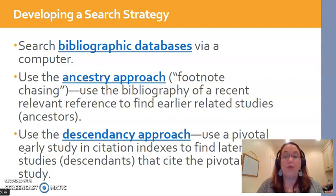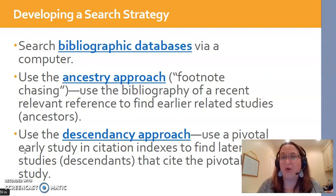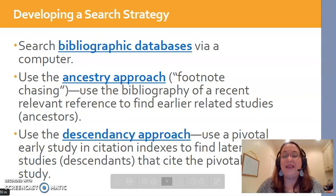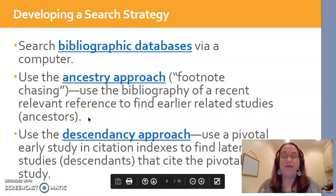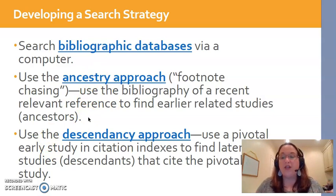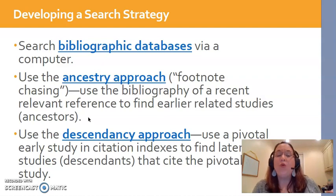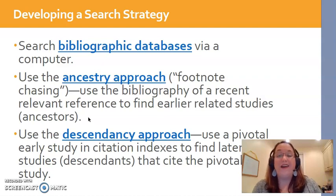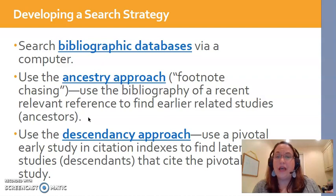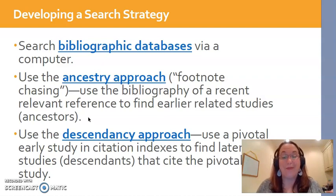This slide shows a few example search strategies. The ancestry and descendancy approaches can be helpful, especially if you've already found some articles that look good. With the ancestry approach, you comb through the reference section of another publication you've looked at. For instance, if I found an article published in 2019 that's exactly what I'm looking for, I can look at the reference section at the back, which lists all the resources those researchers used. The odds are something in that reference list is going to be similar to what I'm looking for, and it can save some time.